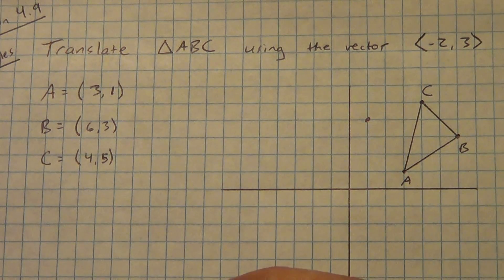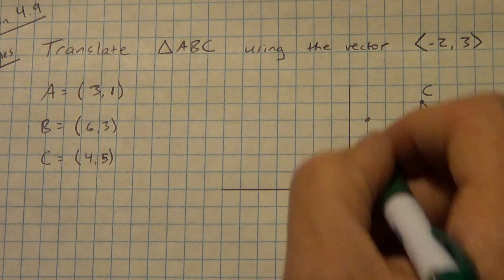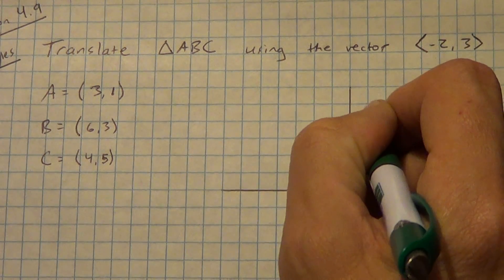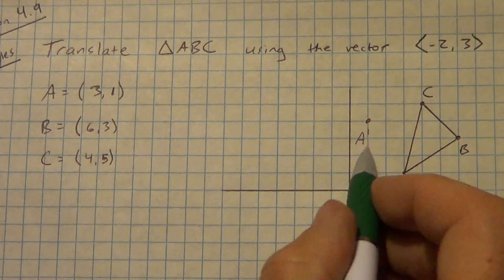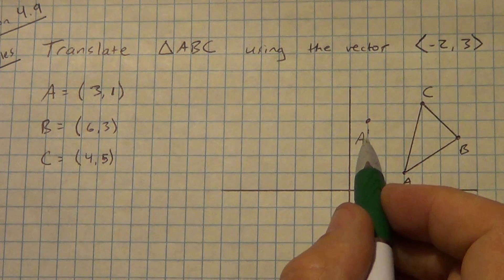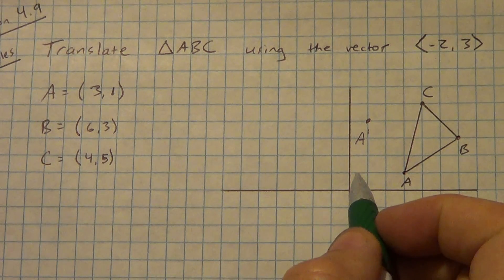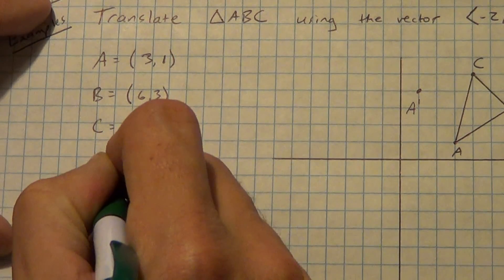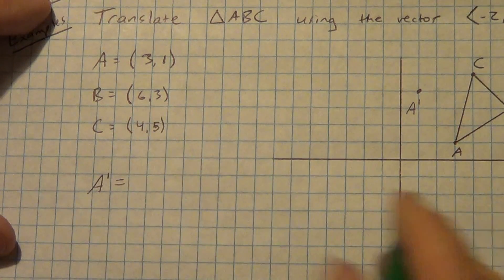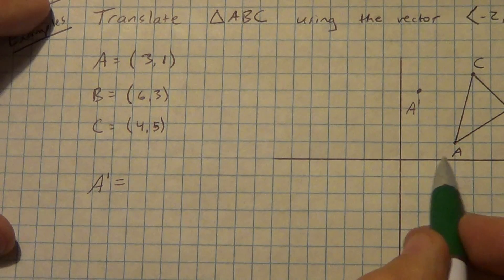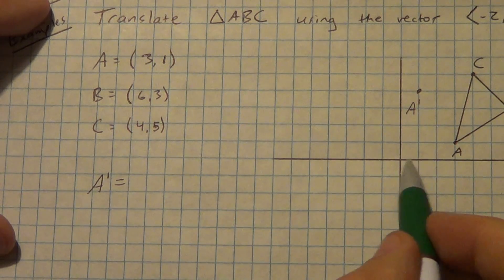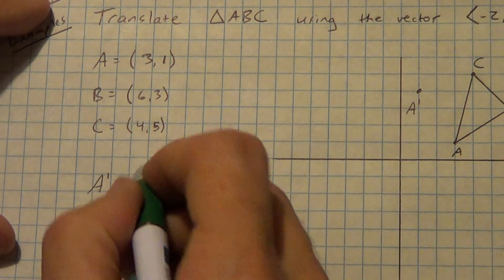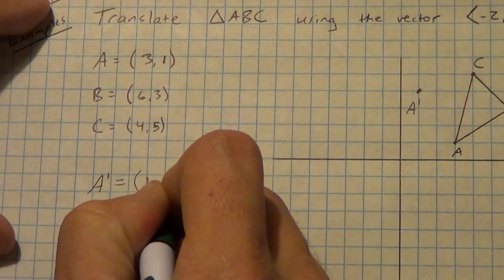One of the things we're going to do is call this A prime — prime just means put a little single quotation mark there. Then off to the side we write its answer. So A prime is located at (1, 4).